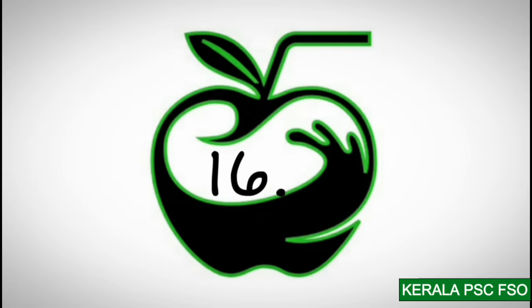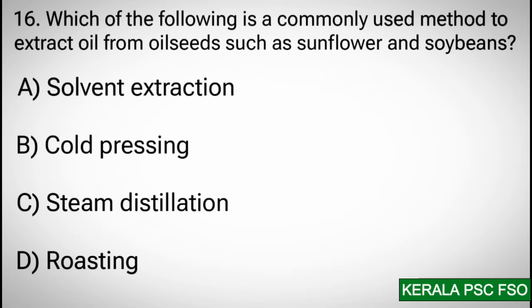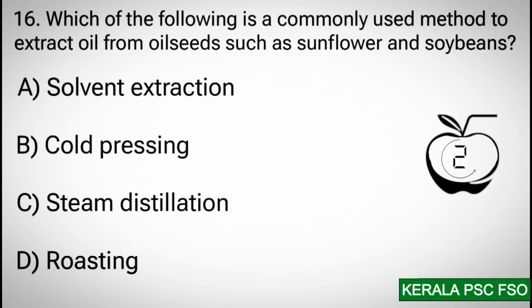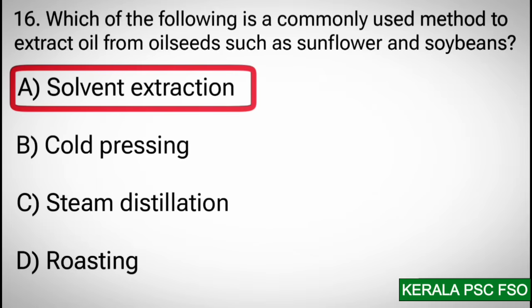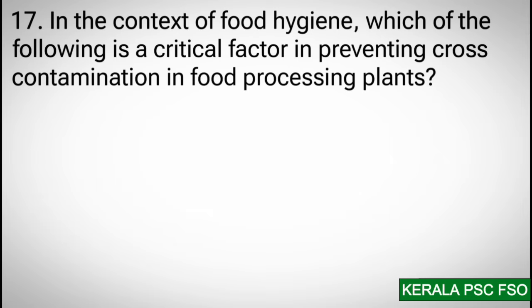Question 16: Which of the following is a commonly used method to extract oil from oil seeds such as sunflower and soybeans? Options: a) solvent extraction, b) cold pressing, c) steam distillation, d) roasting. Correct answer: a) solvent extraction.